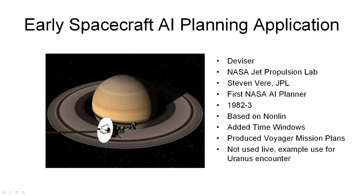Divisor, created at NASA's Jet Propulsion Laboratory by Steve Veer, was the first NASA AI planner. It is based on the non-LIN design but added time window handling, and it could produce Voyager mission plans.